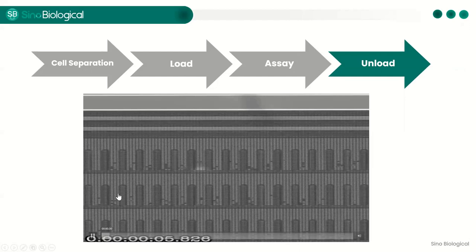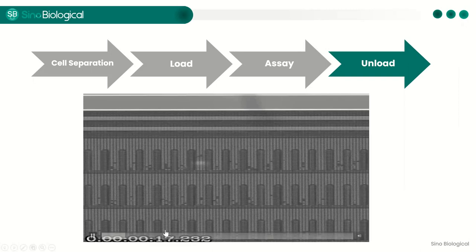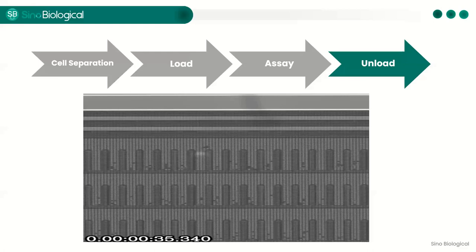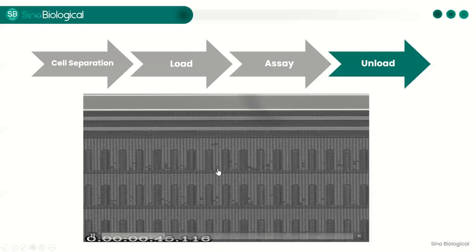After target clones are confirmed through validation tests, target cells can be exported using OEP technology through the Beacon system—cells are pushed out of nanopens and flushed into the mobile phase. It is also worth noting that in addition to exporting target cells, the Beacon system can perform reverse transcription directly on the chip to obtain cDNA sequences of the target antibody, though at relatively higher cost.